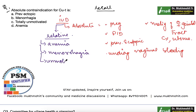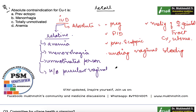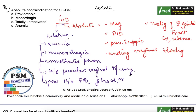Relative contraindications also include an unmotivated person, history of purulent vaginal discharge, past history of pelvic inflammatory disease, and history of uterine cavity problems such as fibroids or congenital malformations. So these are your relative and absolute contraindications for intrauterine devices.